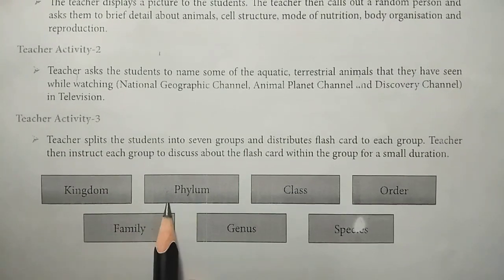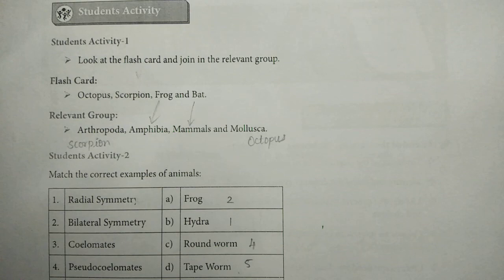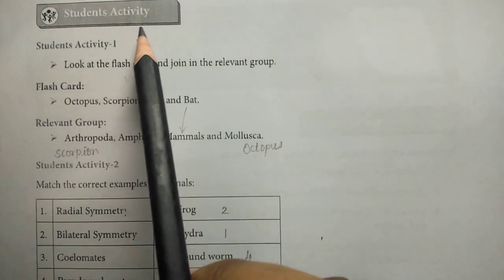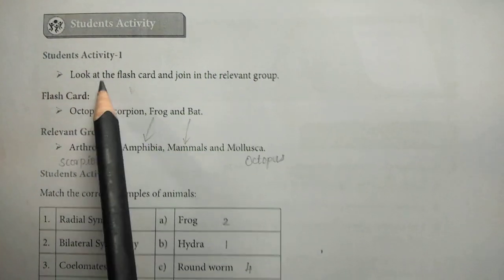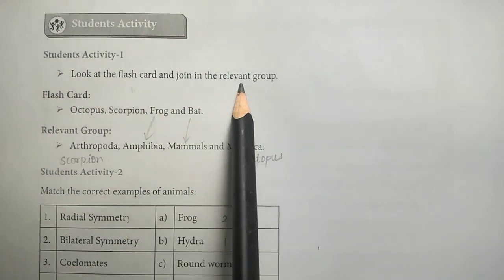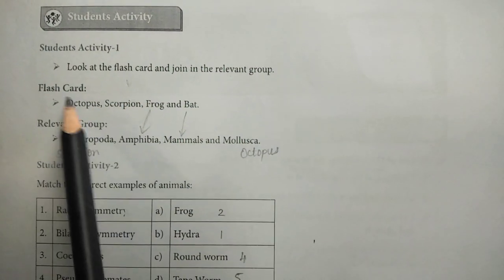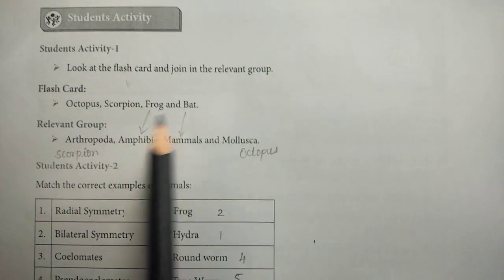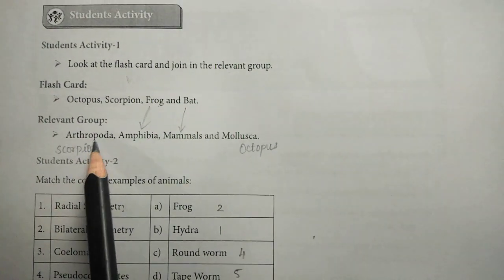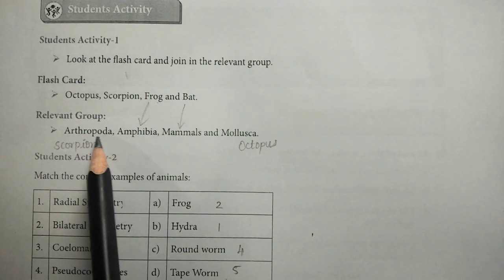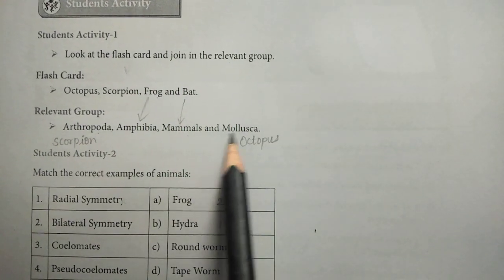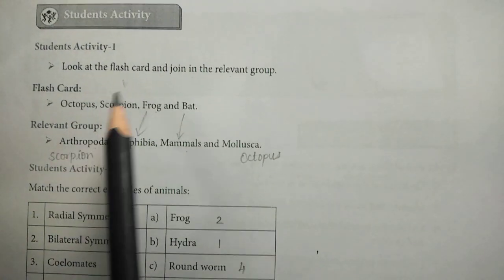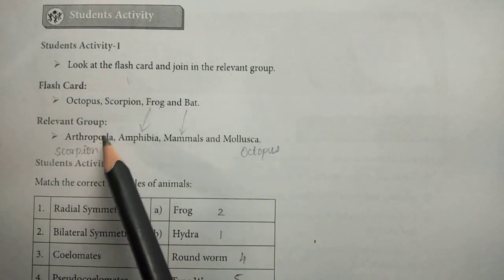We are going to give you the link in the description. Now, student activity and assessment. Student activity 1: look at the flashcard and join the relevant group. In the flashcard: octopus, scorpion, frog, and bat.